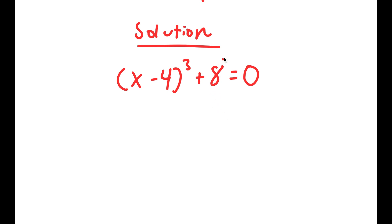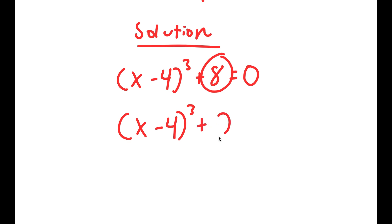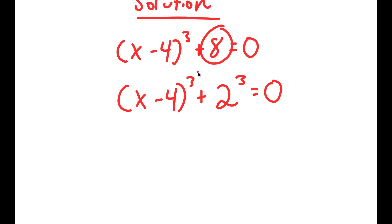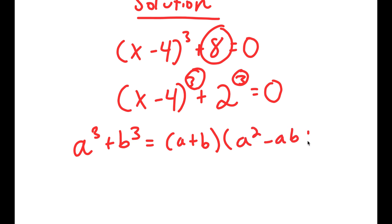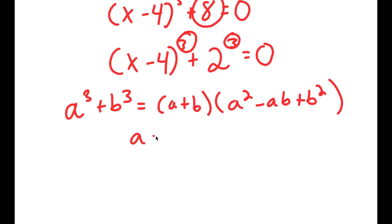Now I'm going to rewrite 8 as 2 to the power of 3. So I get x minus 4 to the power of 3 plus 2 to the power of 3 is equal to 0. The reason I did this is because now we have a cube plus another cube, and this means we can use the property a³ plus b³ equals a plus b times a squared minus ab plus b squared. In this case, a is x minus 4 and b is 2.